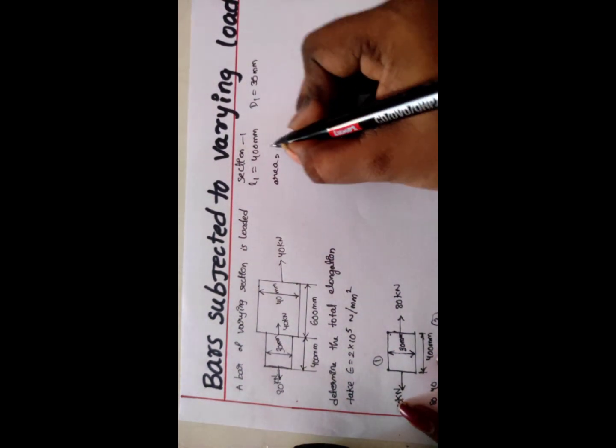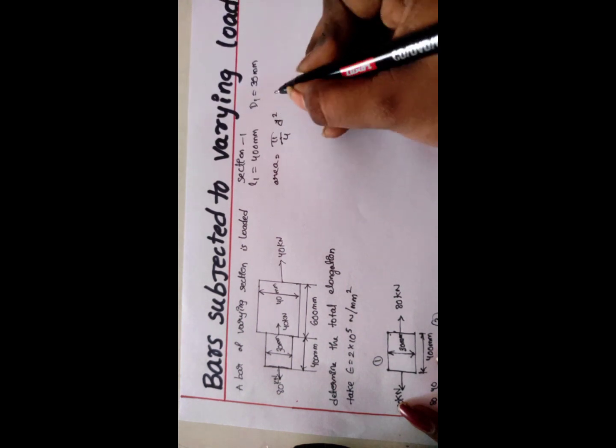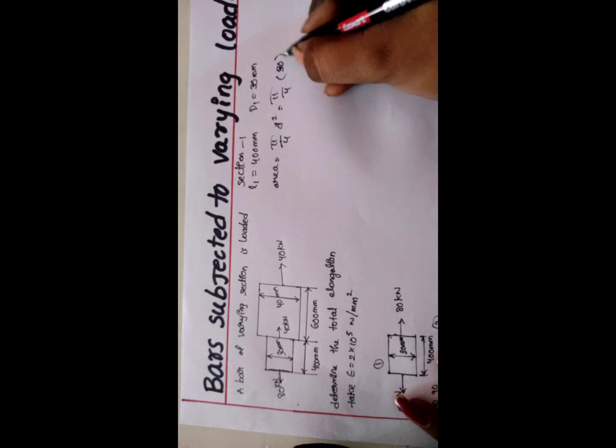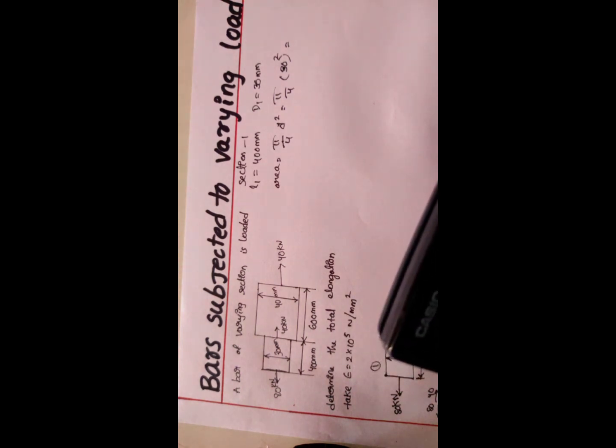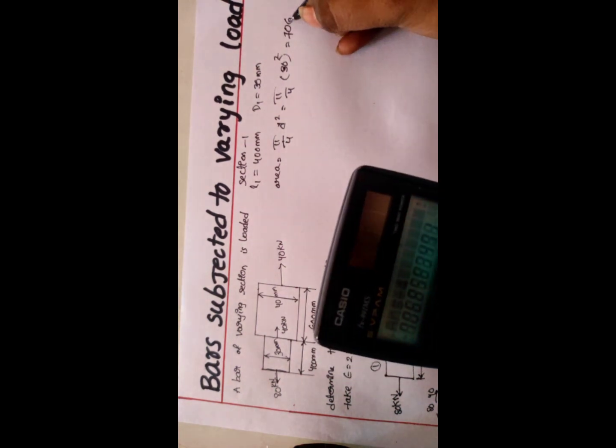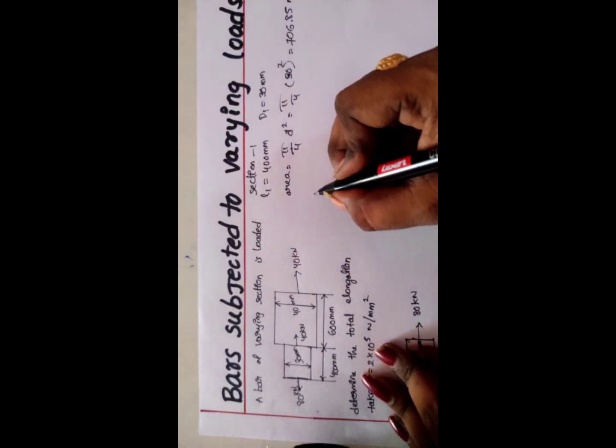Area is equal to π/4 × D². Same π/4 × 30² = 706.85 mm². At section 2: